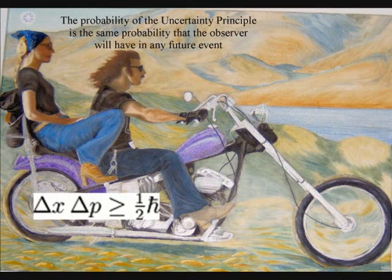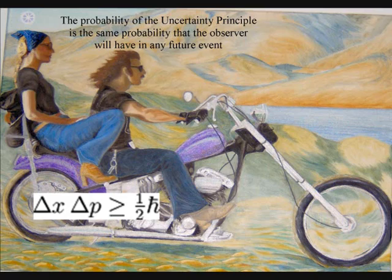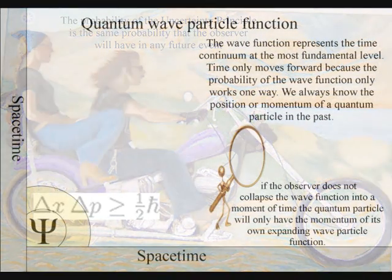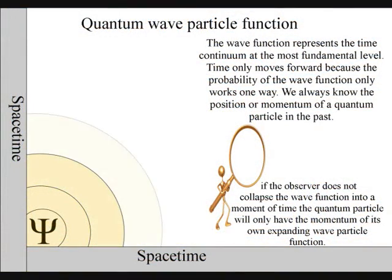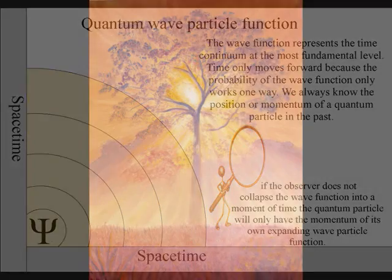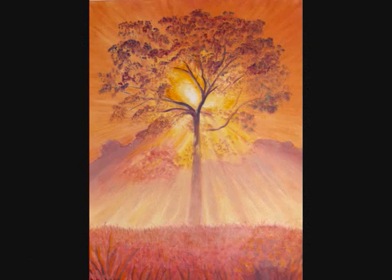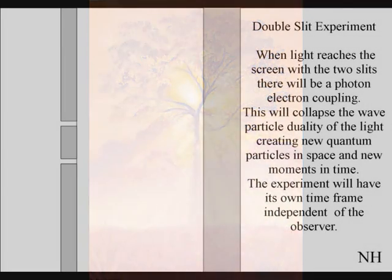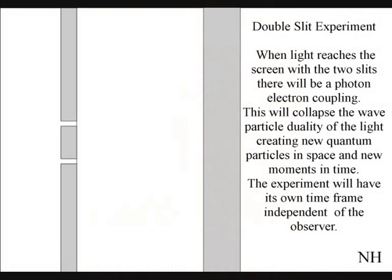If the observer does not collapse the quantum-wave-particle function, the quantum-particle will only have the momentum of its own wave-function. Because light is electromagnetic radiation in the visible spectrum, this process is visible to us.